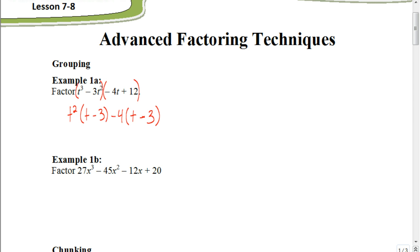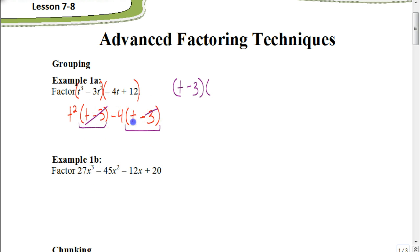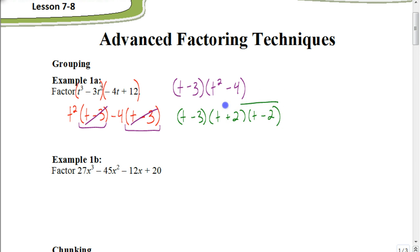Now I want to see what the common factor is between both groups. I can see that the first term has t minus 3, and so does the second term. So I'm going to factor out t minus 3, and when I do that, I'm left with t squared minus 4. We want to make sure we factor completely — t minus 3 can't be factored further, but t squared minus 4 is a difference of two squares, which factors down to t plus 2 times t minus 2.